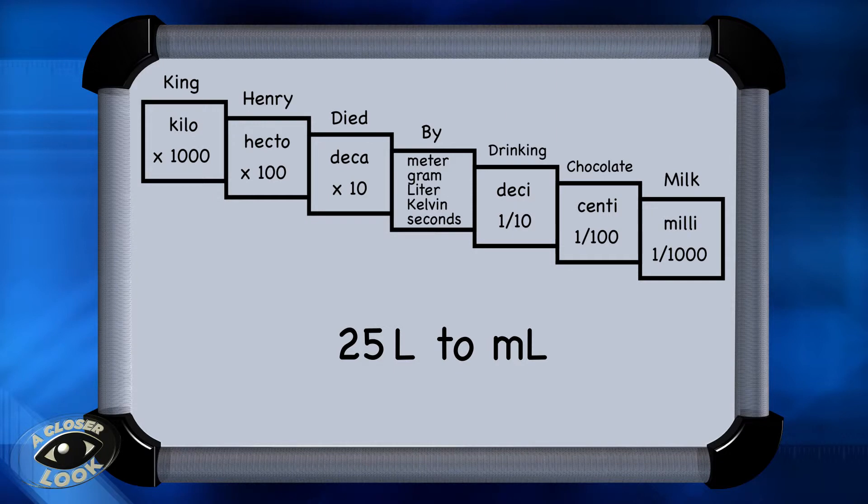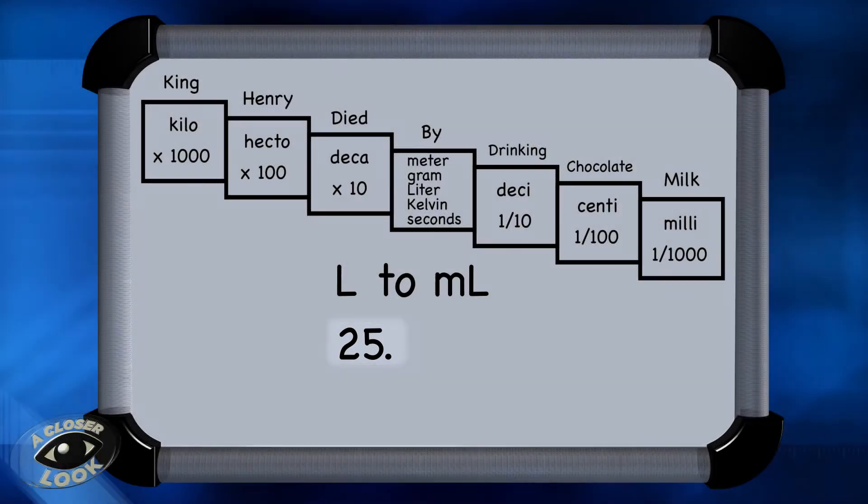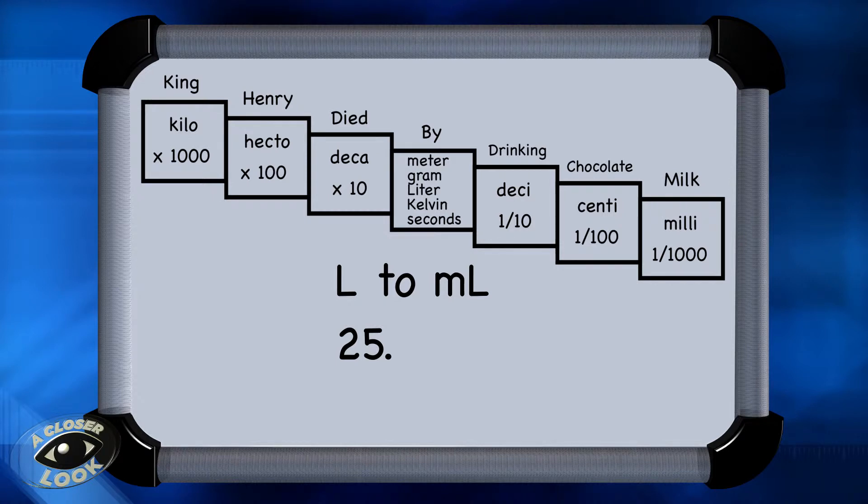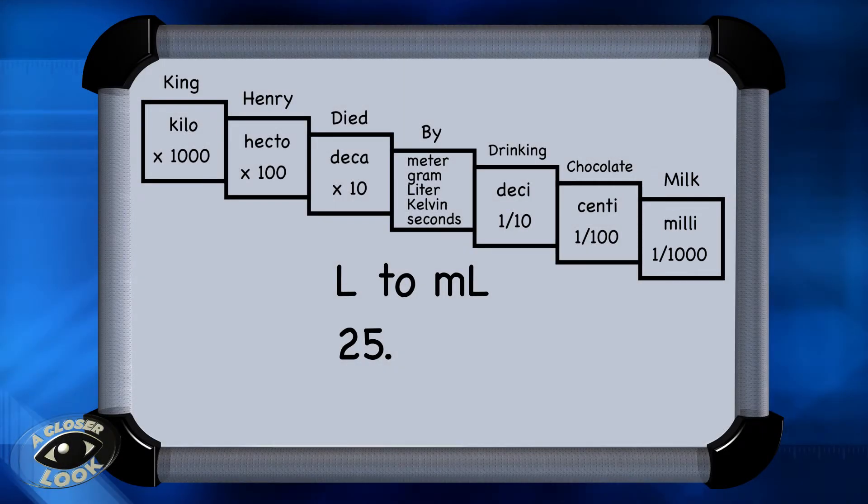Now let's convert 25 liters to milliliters. So here's our 25 with the decimal point, which is understood. In this case, we're going from liters down to milliliters, and so on our King Henry chart, we go one, two, three steps to the right, which means the decimal point moves three places to the right as well.